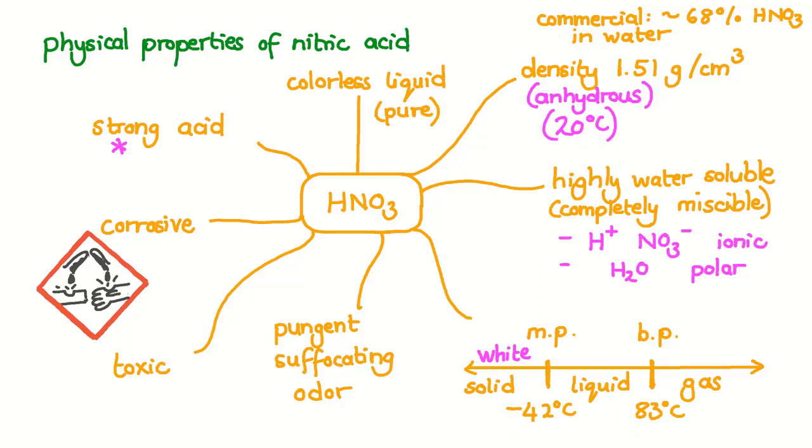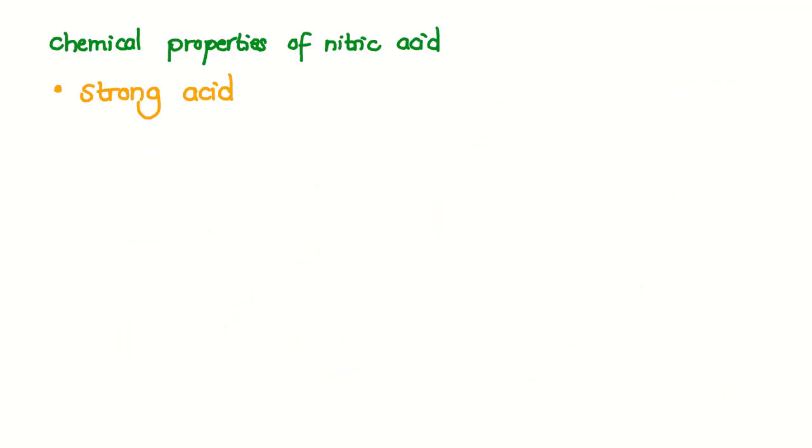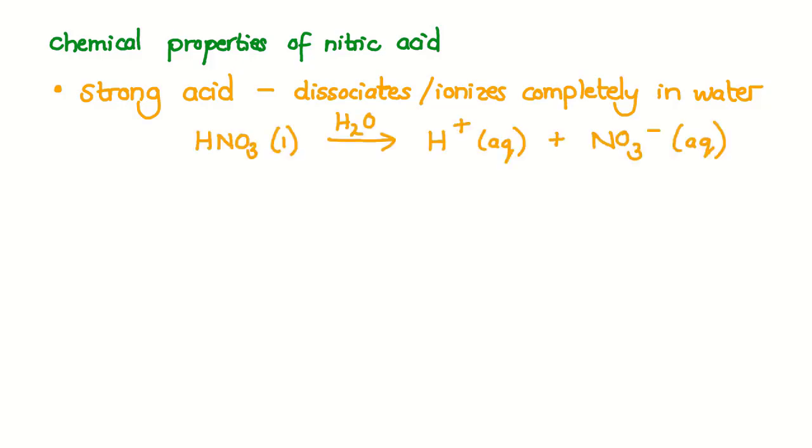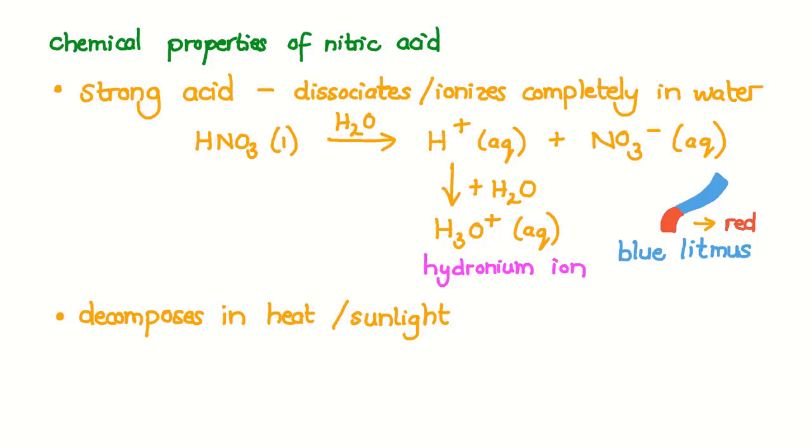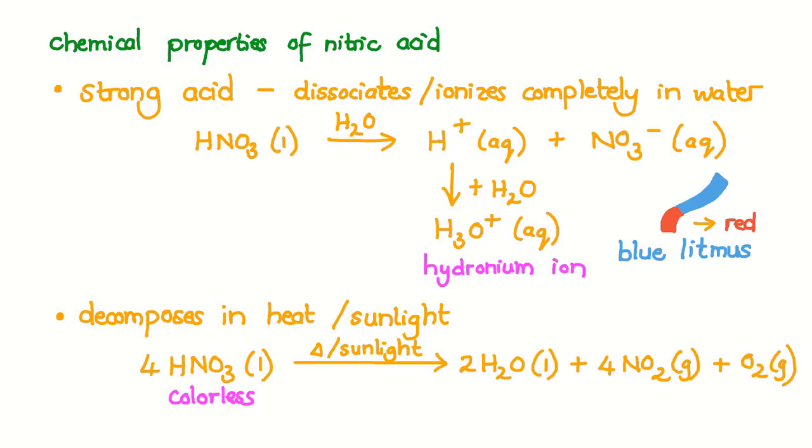Let's have a look now at some chemical properties of this acid. We set nitric acid as a strong acid. This means it dissociates or ionizes into its ions completely in water. We've already seen how it breaks apart into the hydrogen ion and the nitrate ion, and the hydrogen ion can react with water to produce the hydronium ion H3O+. The hydronium ions cause blue litmus paper to turn red, confirming that this is indeed an acid. We've also seen that nitric acid decomposes in the presence of heat or sunlight. We saw this equation earlier and we learned that this decomposition transforms colorless liquid nitric acid into a yellow-brown color because of the presence of nitrogen dioxide gas. When this decomposition occurs as the result of heat, we call it a thermal decomposition.